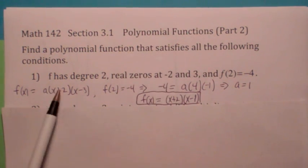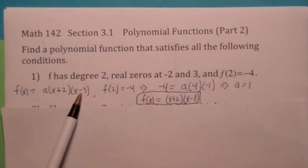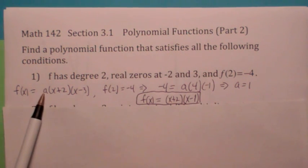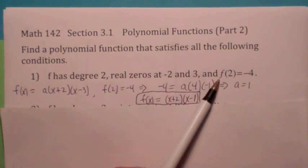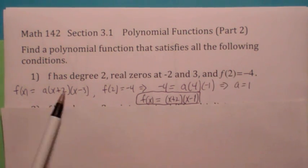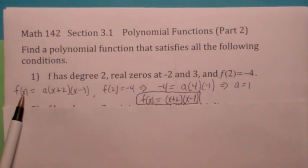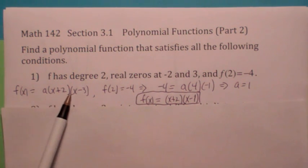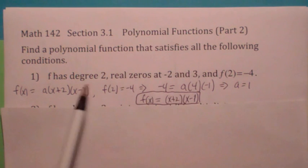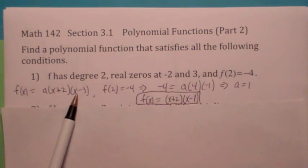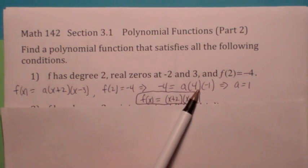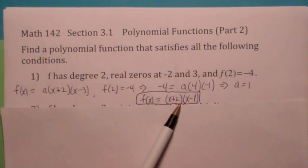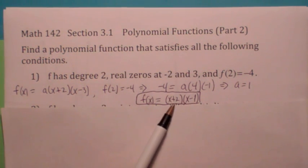If negative 2 is a zero, then x plus 2 is a factor. And similarly, x minus 3 is a factor. Don't assume the coefficient is 1, though. You've got to put a constant here. Call it a. How do you find that constant? Well, you plug in the fact that f(2) = -4. So you set the function equal to negative 4. You plug in 2 for x, so you get a times... This becomes a 4, this becomes a negative 1. Lo and behold, a turns out to be positive 1. But don't assume it's always going to be positive 1. Usually it's not. So there is your function, right there.